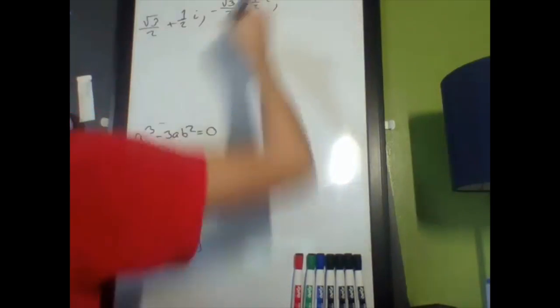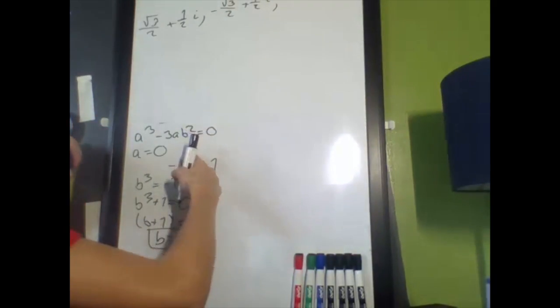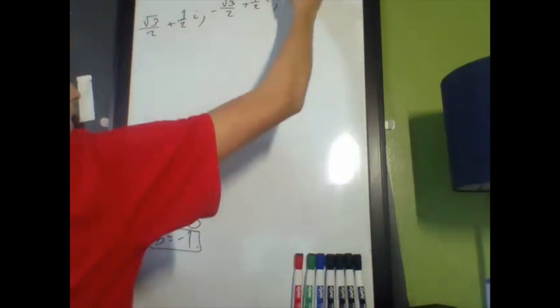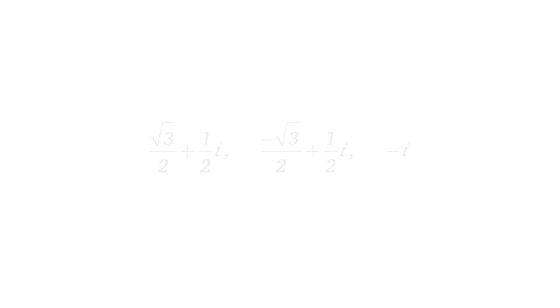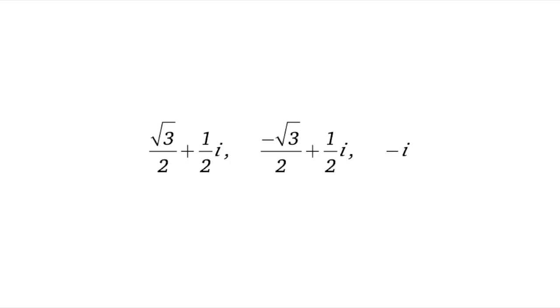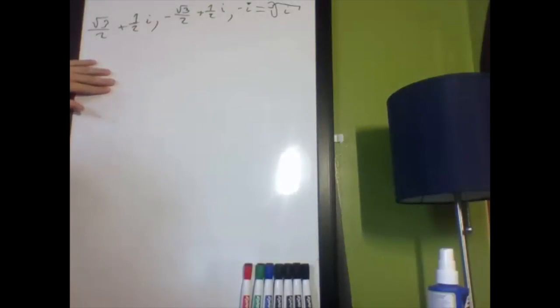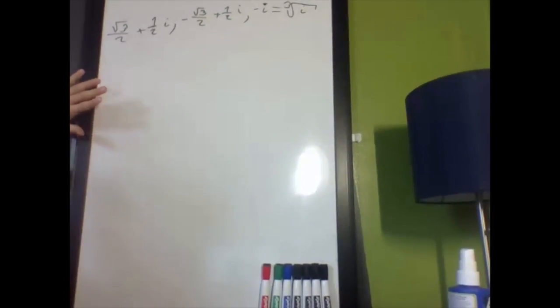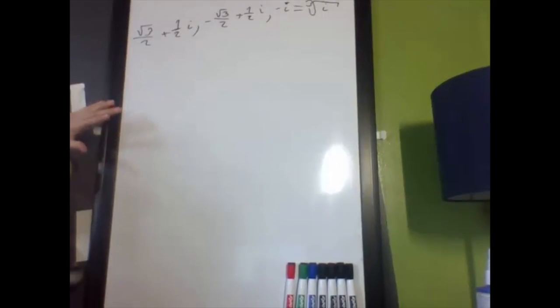So, we have one more solution, and it's going to be when a is 0, b is negative 1, so that's just negative i. These are the solutions to the cubed root of i. So, I could have done this much, much more easily.